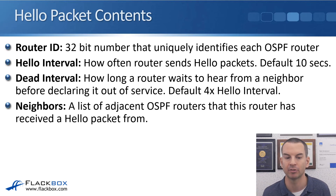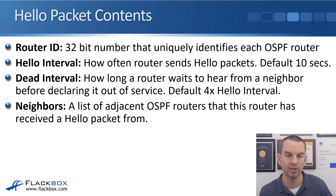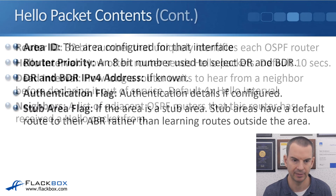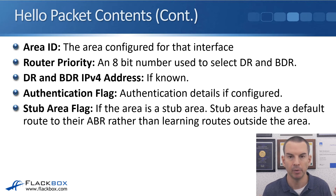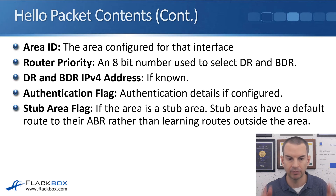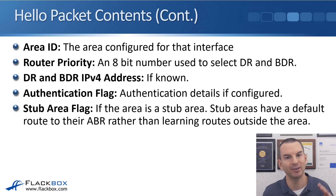The hello packet also includes a list of adjacent OSPF neighbors that this router has received a hello from — so when it sends a hello out each interface, it includes all its known neighbors. It also includes the area ID — since an ABR can have interfaces in multiple areas, the area is configured at the interface level and sent in the hello packet for that link. Additionally, the router priority is an 8-bit number used to select the DR (designated router) and BDR (backup designated router), which will be discussed later. If a DR and BDR exist, their IPv4 addresses are also included.